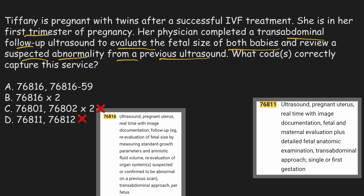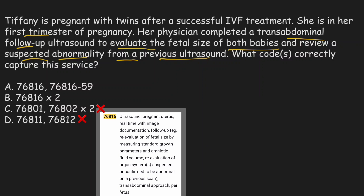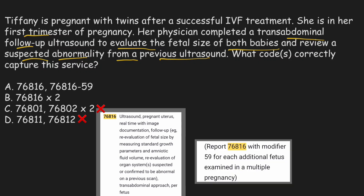Now we are left with option A and option B. There is a parenthetical note below 76816 stating: report 76816 with modifier 59 for each additional fetus examined in a multiple pregnancy. Since the question mentions evaluating the fetal size of both babies, there is an additional fetus, so we must report 76816 again with modifier 59. Therefore the right answer is option A — 76816 and 76816-59. We eliminate option B because we must report it again with modifier 59 for each additional fetus, not simply multiply the code twice.